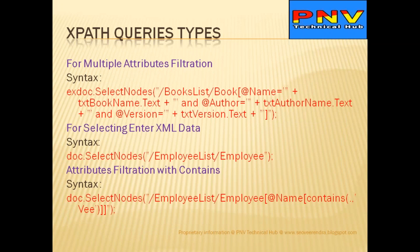Consider filtering multiple attributes. We already have a books-related information structure with three entities: name, author, and version. If you don't want to allow duplicate records based on name, author, and version, the XPath query works like: @name='txtBoxName.Text' and @author='txtBoxAuthor.Text' and @version='txtBoxVersion.Text'. This filtered data will be written into an XmlNodeList.